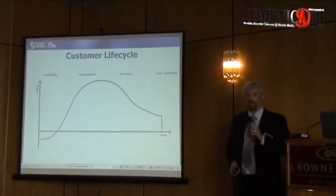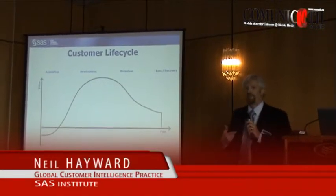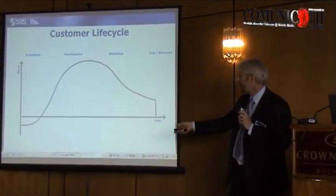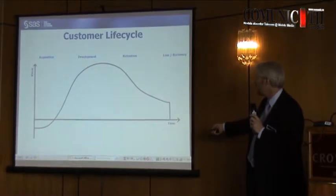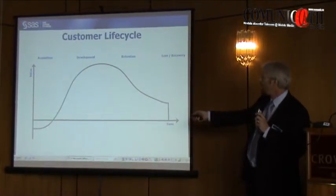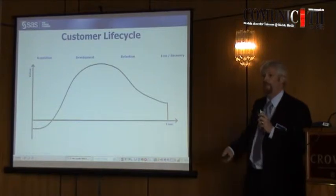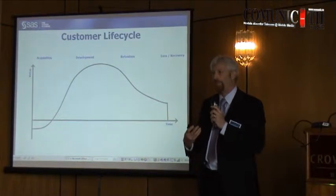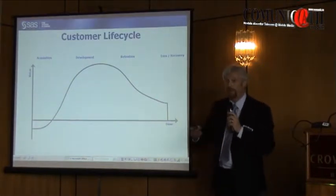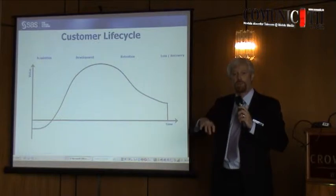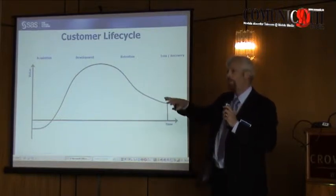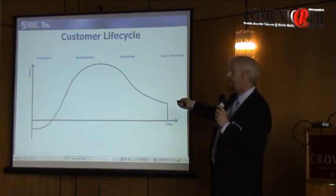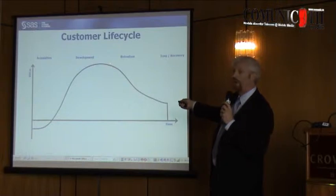This is a representation of a customer life cycle. It describes an axis of value over time. It'll start off negative because it's costing you money to acquire a customer — typically you will be buying that customer in. Your objective is to drive the value you get from the relationship with that customer up as quickly and as far as possible up the curve, and keep it up at that level for as long as possible.